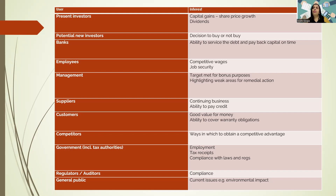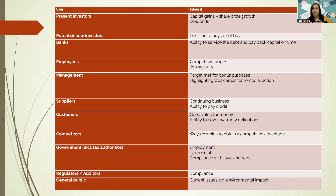When it comes to customers, they want good value for money and are also interested in the continuity of the business. For example, if they bought a product with a 10-year warranty but the business closed in two years, they've lost eight years of their warranty period. So customers are interested to know if the business has the ability to cover warranty obligations. Competitors are interested because they want to know how they can obtain a competitive advantage — if they know how your business is performing through your financial statements, they can find ways to gain that advantage.